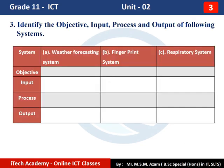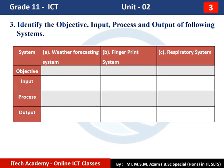Question Number 3: Identify the objective, input, process, and output of the following systems. There are three systems given on the screen: weather forecasting system, fingerprint system, and respiratory system. We have to identify their objectives, input, process, and output.